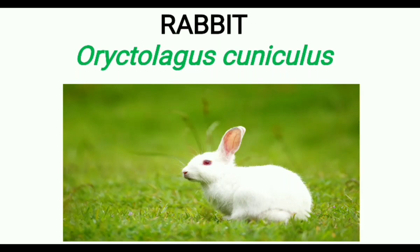An example of Phylum Chordata is Oryctolagus cuniculus, i.e., Rabbit.